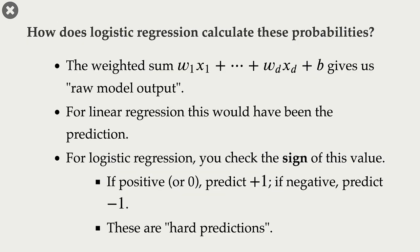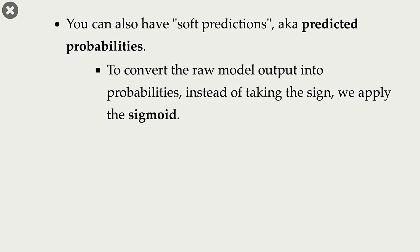How does logistic regression calculate these probability scores? In logistic regression, we calculate the raw model output by taking the weighted sum of feature values and adding the bias term to it. If we were doing linear regression, this would have been our prediction. In case of logistic regression, we also apply a threshold — we check whether this raw model output is greater than or equal to 0. If true, we predict positive; if false, we predict negative. These are our hard predictions. We can also get soft predictions from these raw model outputs. To convert the raw model output into probability scores, instead of applying a threshold, we apply the sigmoid function.